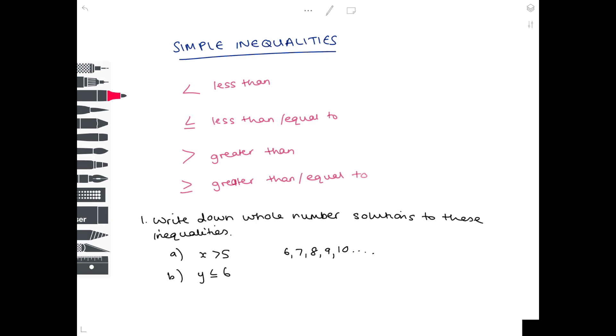In part b, we're looking for y values which are less than or equal to 6. So that would be 6, 5, 4, 3, 2, 1 for example.